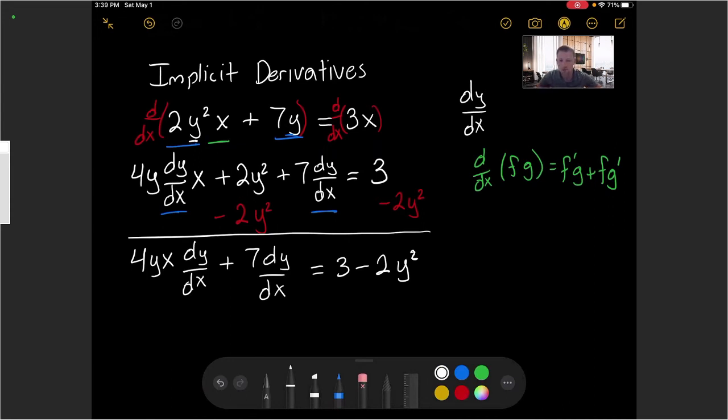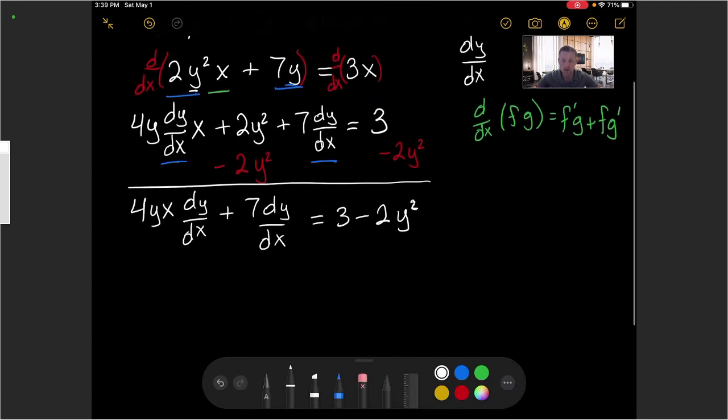So I've got my dy/dx terms isolated on the left side and my non-derivative terms on the right. I can now consider factoring out the dy/dx term on the left. This is what I'm going for.